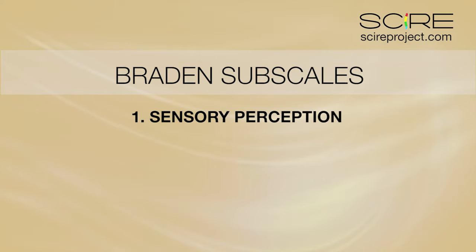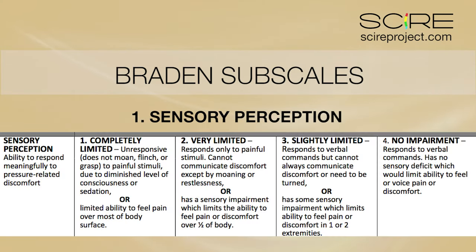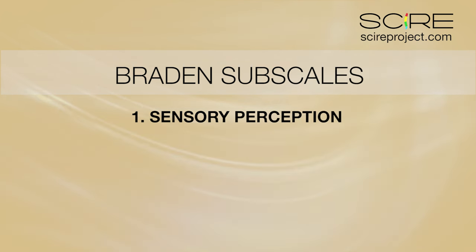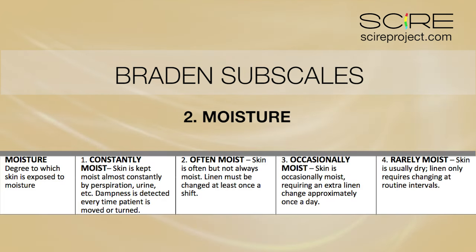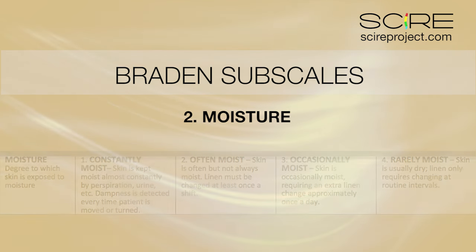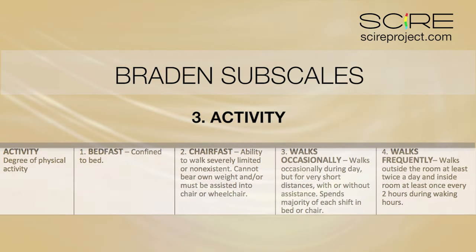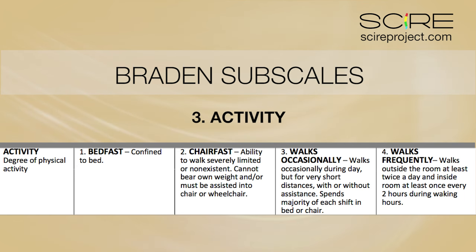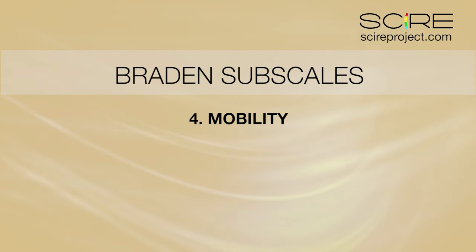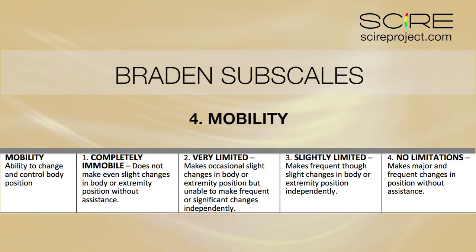The Braden scale is a 23-point instrument composed of six subscales. These are: sensory perception — the level of consciousness of a patient and their ability to sense and react to pain related to pressure; moisture — excessive and continuous skin moisture can pose a risk to the integrity of the skin; and activity — very little or no activity can cause decreased muscle mass and tissue breakdown.